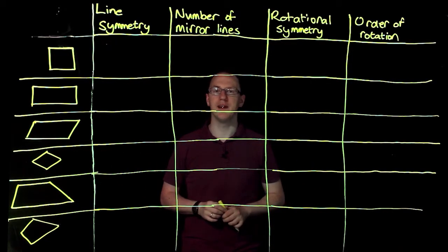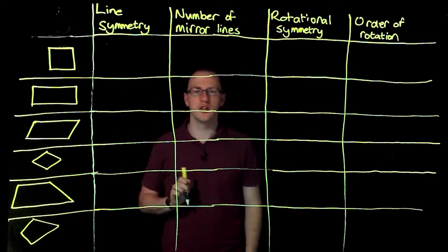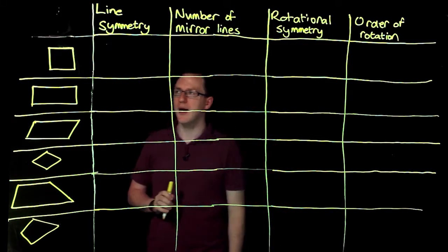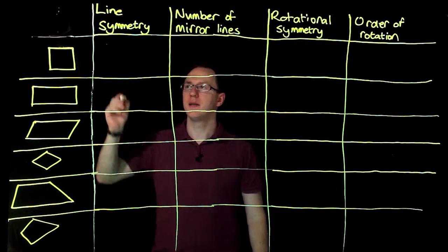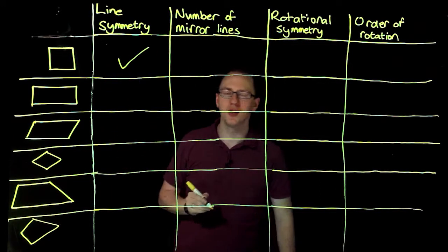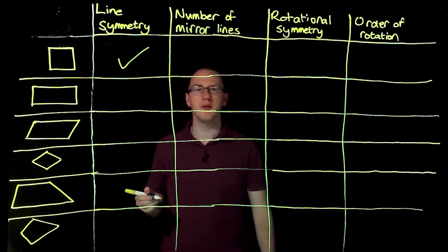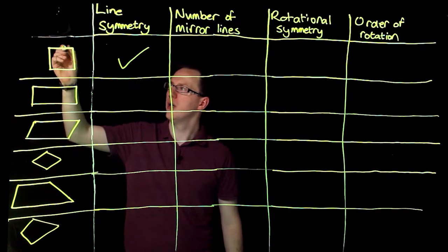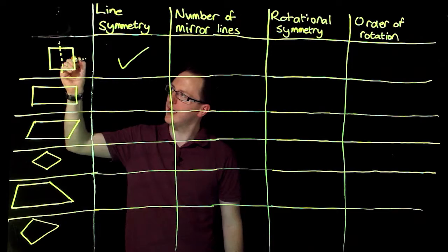So let's look at each shape individually. We want to start off with our square. With our square, it does have line symmetry, so I'm going to put a tick here because it does have line symmetry. Let me try to identify where those are. So there's one down here and there.